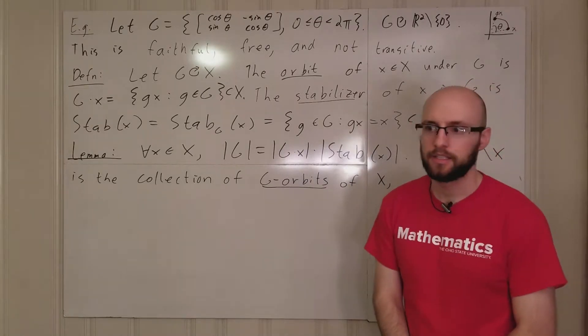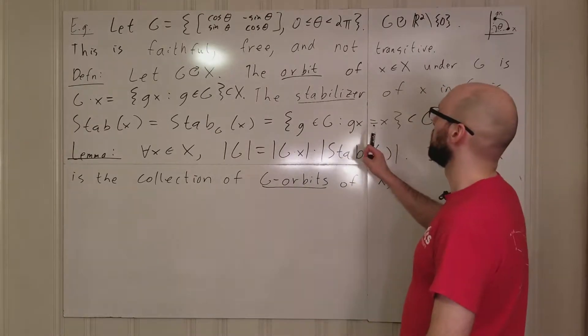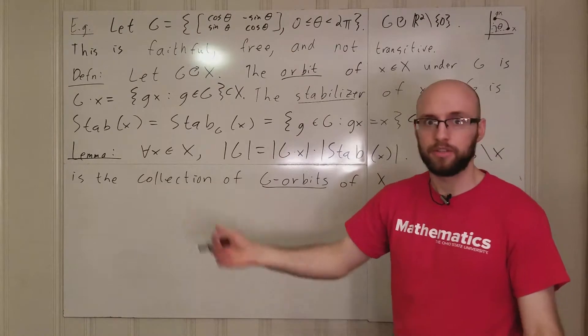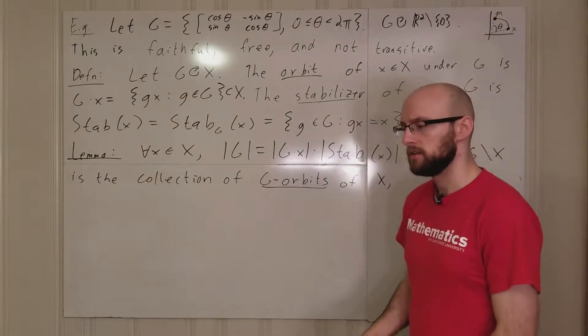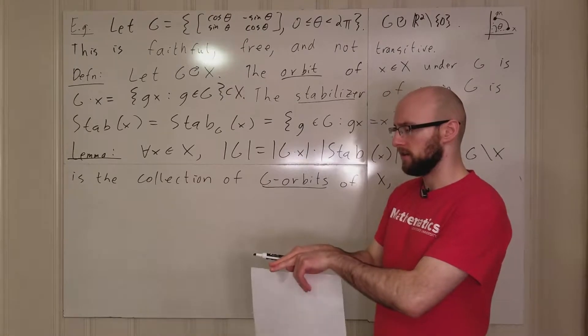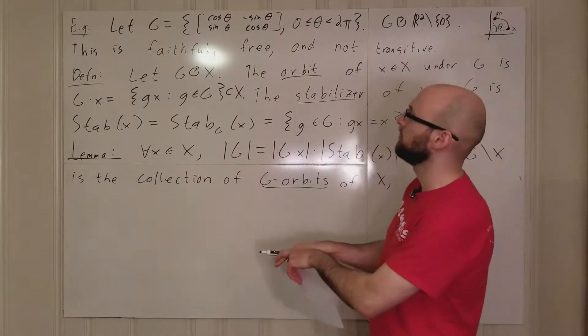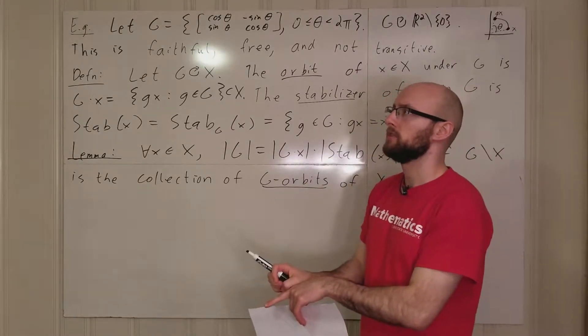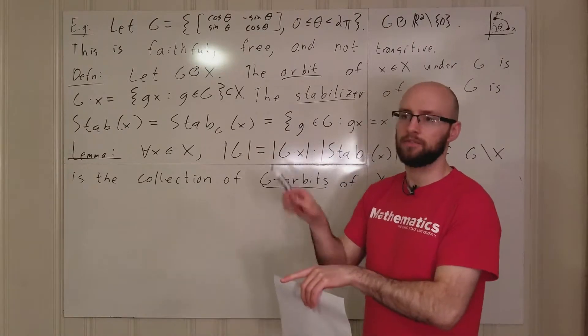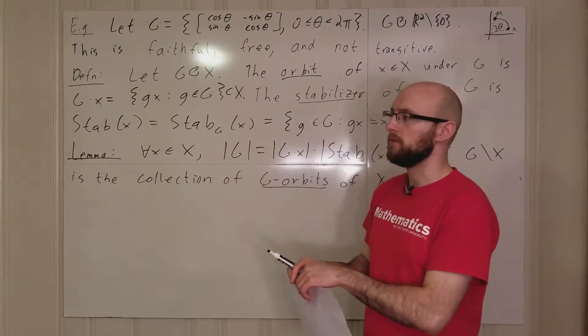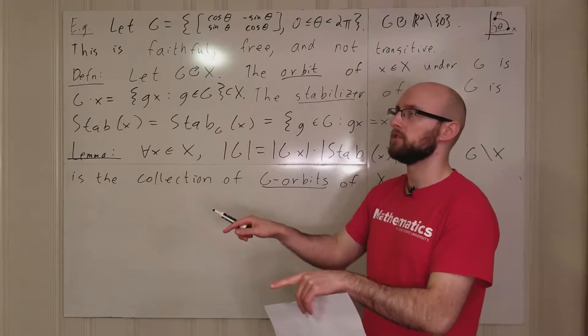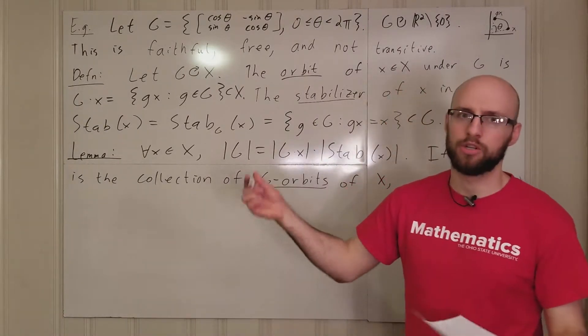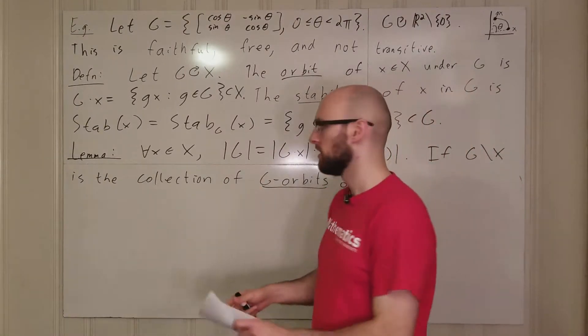Well, I guess that sort of implies that the orbits of x partition x, and that is something that is true and you can prove it. Because if you consider two things equivalent if there is a g that maps one to the other, then obviously the identity will map any element of x to itself. If you have g mapping x to y, then g inverse should map y to x, and then transitivity should be from the other group action property thing.